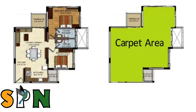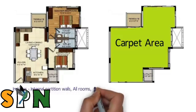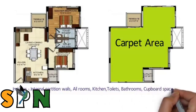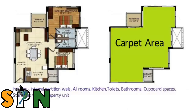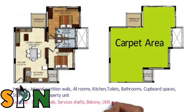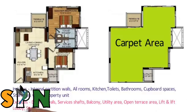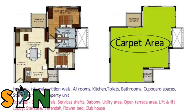For better clarity, here are the inclusions and exclusions in carpet area. Carpet area includes area covered by internal partition walls of the apartment, all rooms in a flat, kitchen, toilet, bathroom, cupboard spaces, and staircases within the property unit. Carpet area excludes area covered by external walls, surface shafts, balcony, utility area, open terrace area, lift and lift lobby, staircase, veranda, flower bed, and clubhouse. So while buying property, look at the carpet area and then make your decision, because that is the number that gives you an idea of the actual usable space.